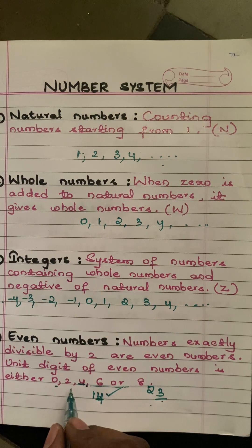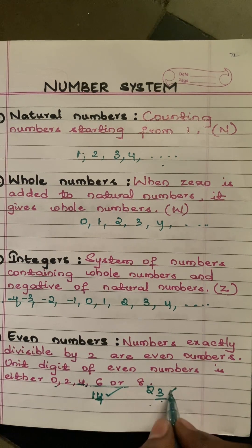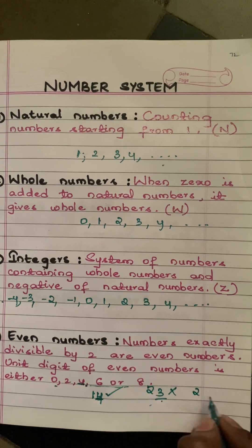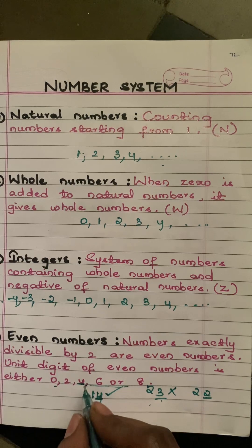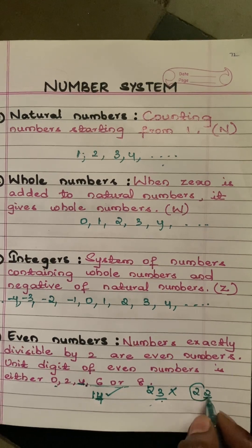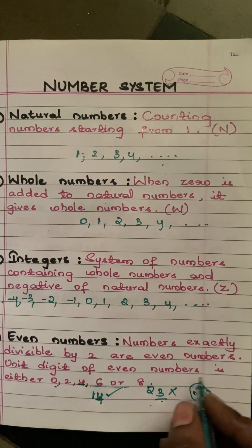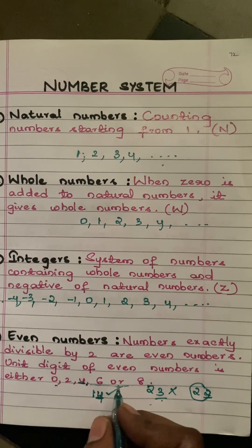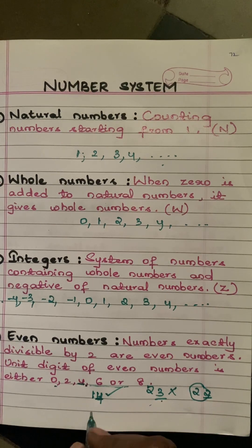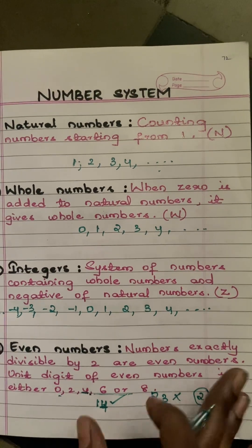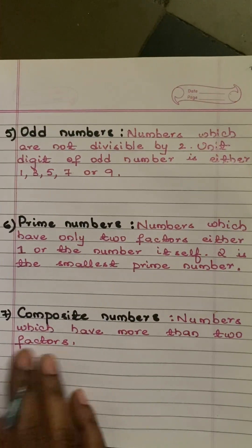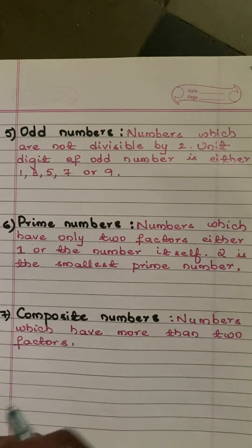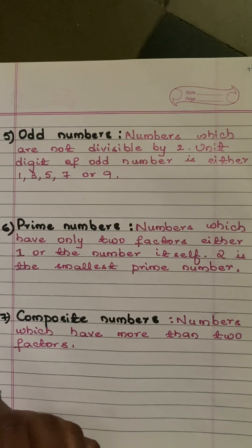If I take the number 23, the unit digit is three, but three is not in the set zero, two, four, six, eight — so it is not divisible by two. If I take 22, the unit digit is two, which is included in the set, so it is an even number. You need not divide the whole number; just by seeing the unit digit you can tell whether it is an even number.